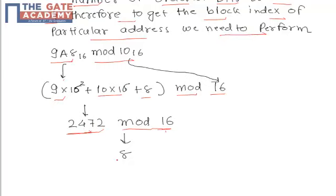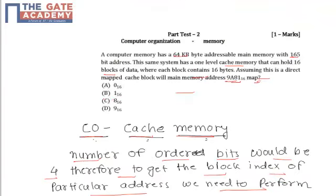The division gives us remainder 8. So the correct answer to this question is 8, which is option C. Thank you, friends.